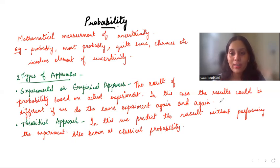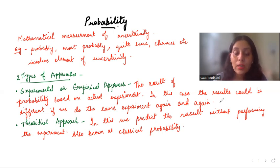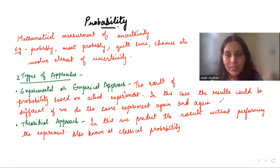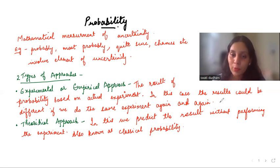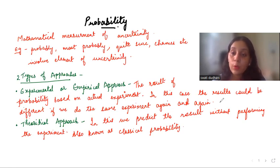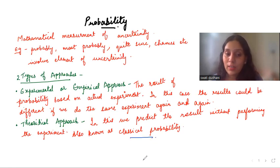You have two different types of approaches in probability. The first one is the experimental or empirical approach — the result of probability is based on actual experiment. If you keep doing the experiment again and again for a particular event, the results keep changing. On the other hand, the theoretical approach: here we cannot predict the result without performing the experiment. This is also known as classical probability.